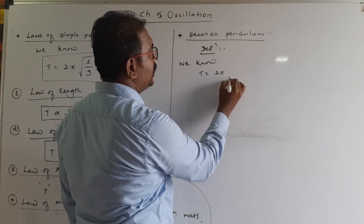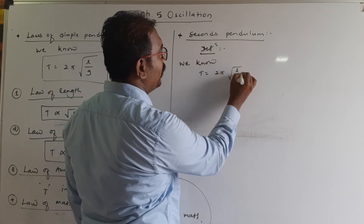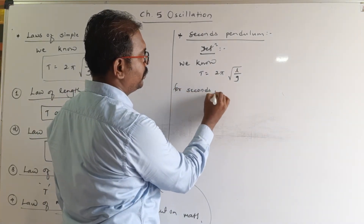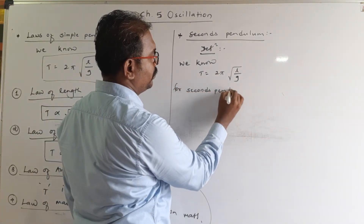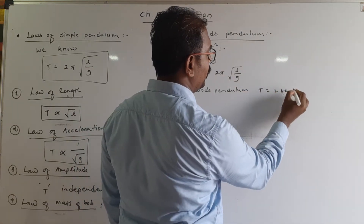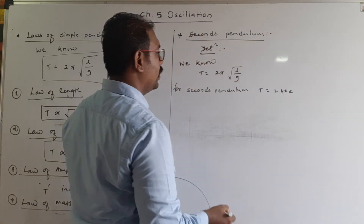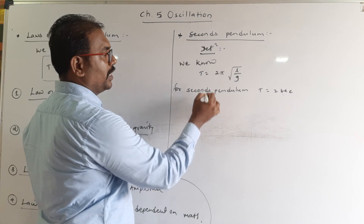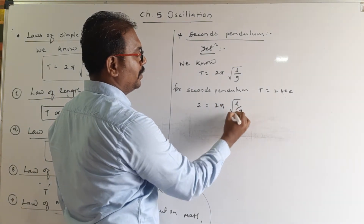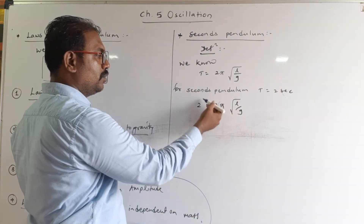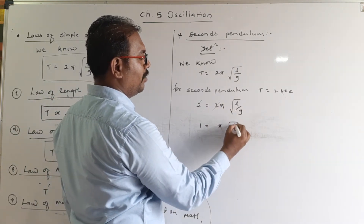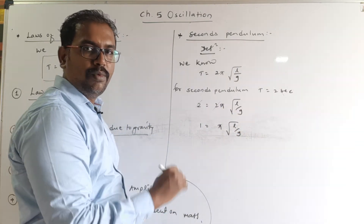We know the formula for period is T = 2π√(l/g). For a seconds pendulum, T = 2 seconds. Substituting, 2 = 2π√(l/g). The twos cancel, giving 1 = π√(l/g). Squaring both sides, we get 1 = π²l/g.